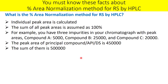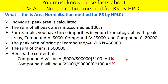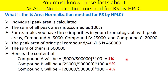Now we have the individual peak areas and the total peak area. The content of compound A is 5000 divided by 500000, multiplied by 100, giving 1%. Similarly, the content of compound B is 5% and compound C is 4%.